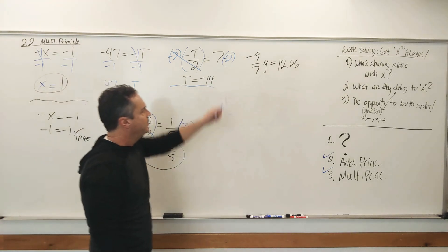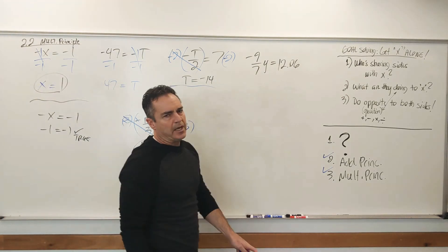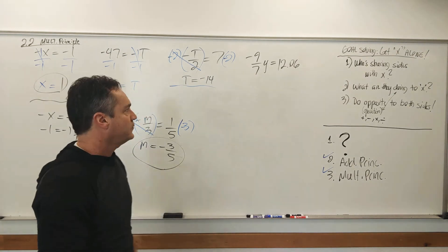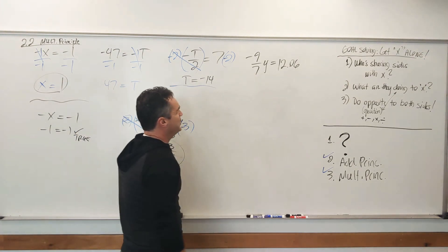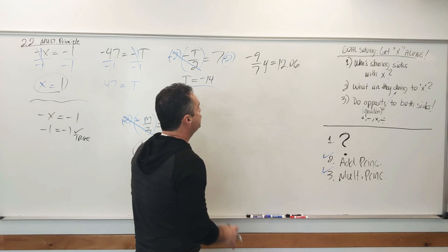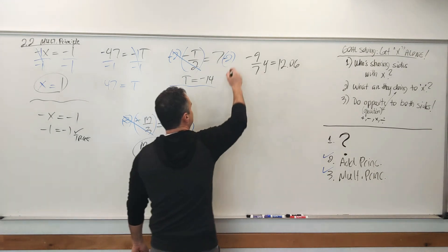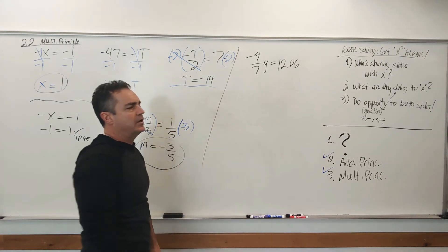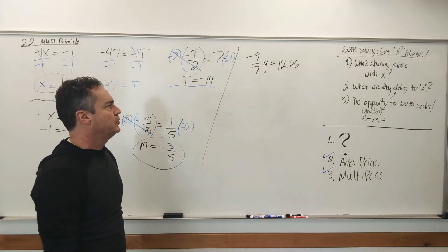You've got a problem or two in your assignment with a fraction and a decimal together. Who is sharing sides with Y? Negative 9 sevenths is sharing sides with Y.